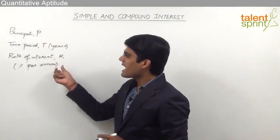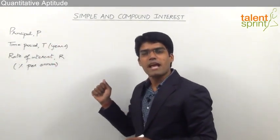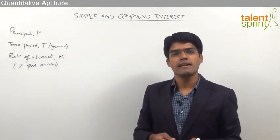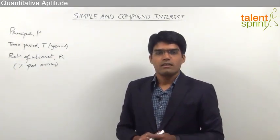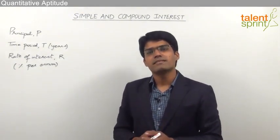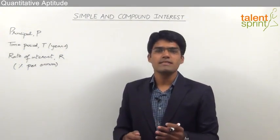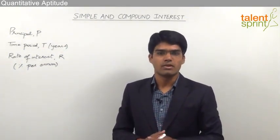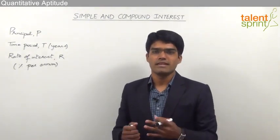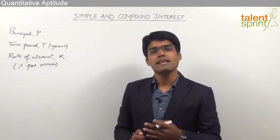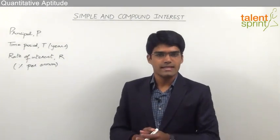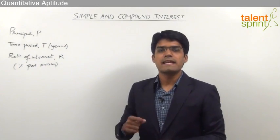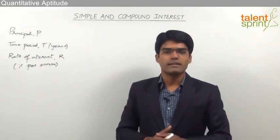Rate of interest R, expressed as percentage per annum, is the amount paid over the principal per 100 per year. For example, if the rate of interest is 8% per annum, that means for every 100 rupees borrowed the person has to pay 8 rupees per year. So if a person has borrowed 1000 rupees, they will be paying 80 rupees per year as interest.